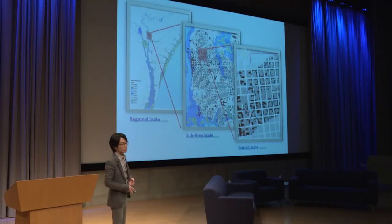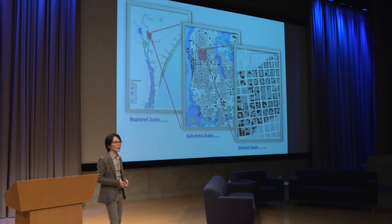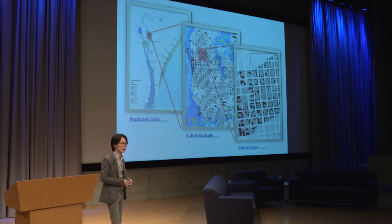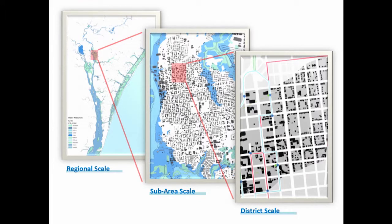So we decided to use GIS to help us throughout the process, and we encouraged students to carry GIS analysis throughout the entire project lifecycle. We did this through three iterative steps, each done at a different geographic scale — from regional to sub-area to site level.